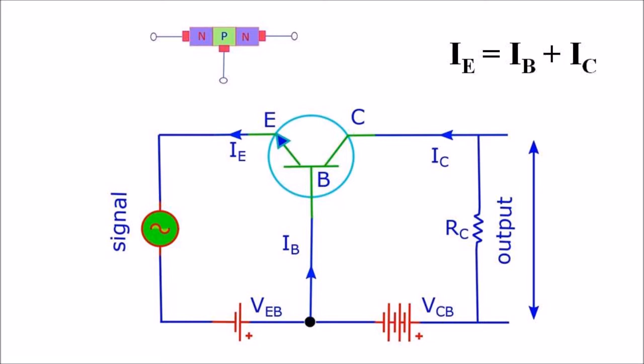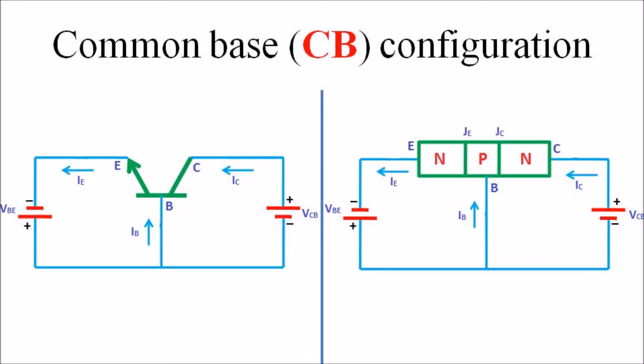The emitter current is the input current and the collector current is the output current. The output collector current is less than the input emitter current, so the current gain of this amplifier is actually less than 1. In other words, the common base amplifier attenuates the electric current rather than amplifying it. The base-emitter junction at the input side acts as a forward biased diode, so the common base amplifier has a low input impedance, i.e., low opposition to the incoming current. On the other hand, the collector-base junction JC at the output side acts somewhat like a reverse biased diode, so the common base amplifier has a high output impedance.